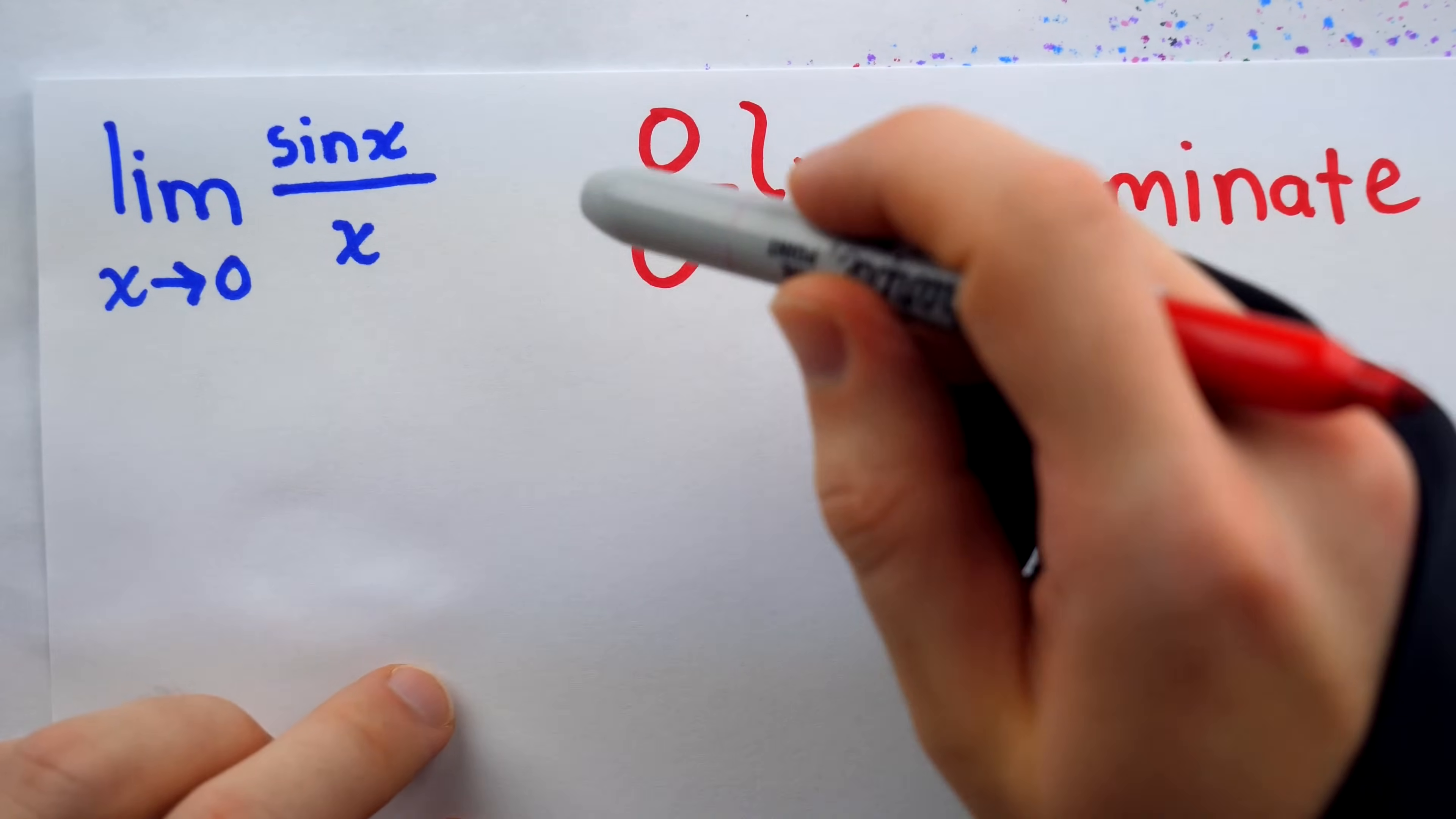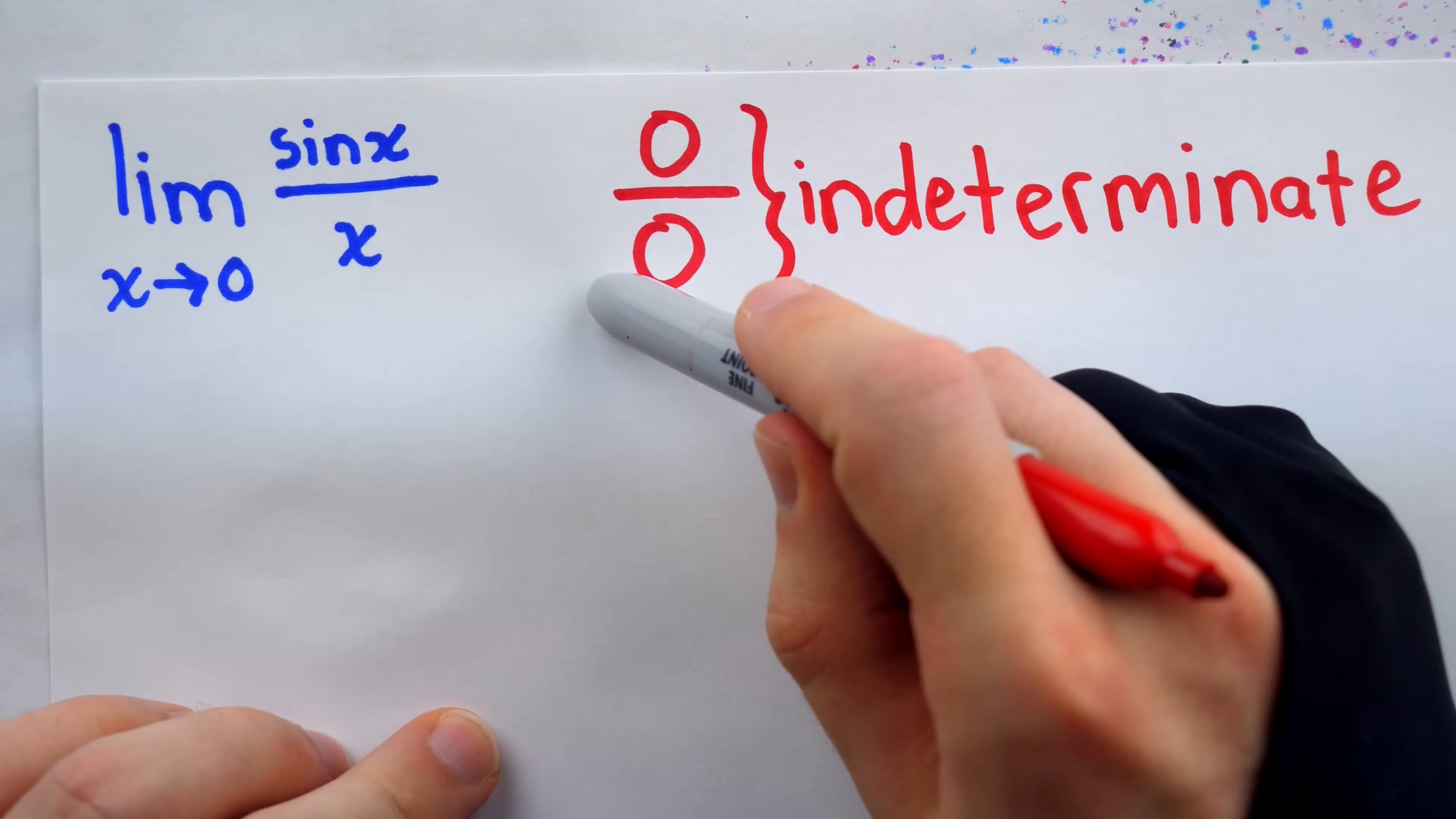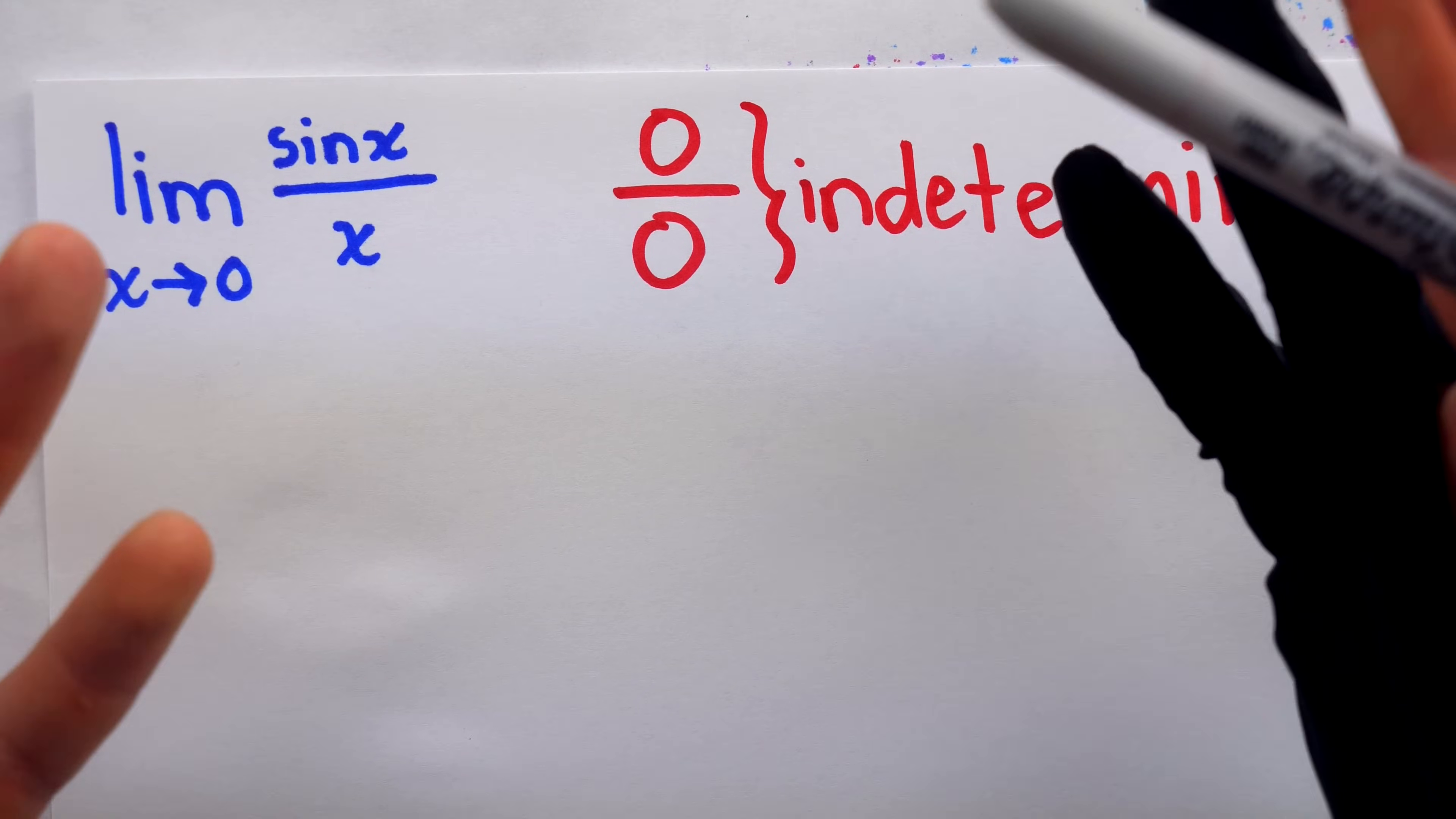A common mistake is to say, oh, well, it's division by zero, so the limit doesn't exist. But no, this just means that you can't evaluate it using this strategy. Others might think, well, it's zero over zero, so it's basically just one, right? Well, not necessarily.